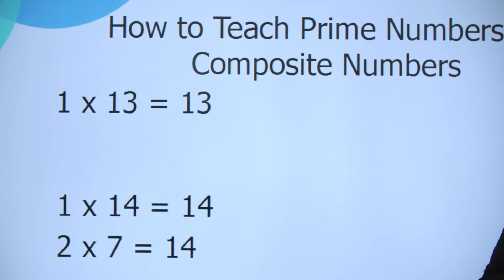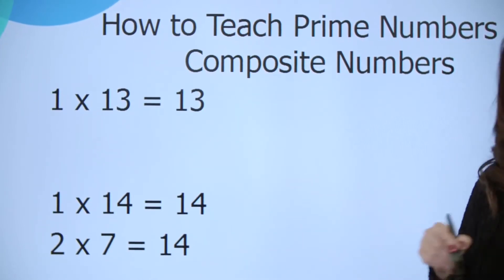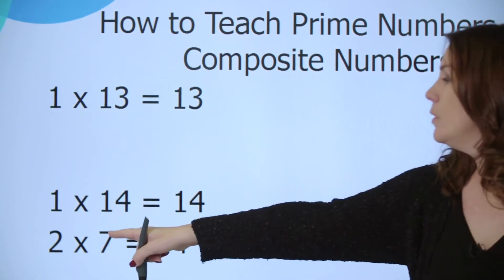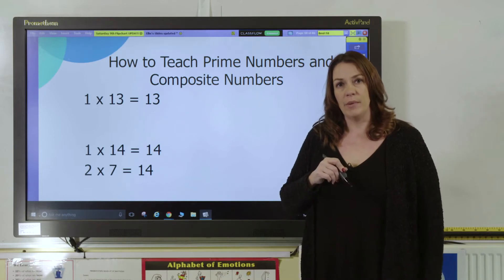Composite numbers are numbers that are made up of more than two factors. For example, the number 14 has the factors 1, 2, 7, and 14 in its times tables, so it is a composite number.